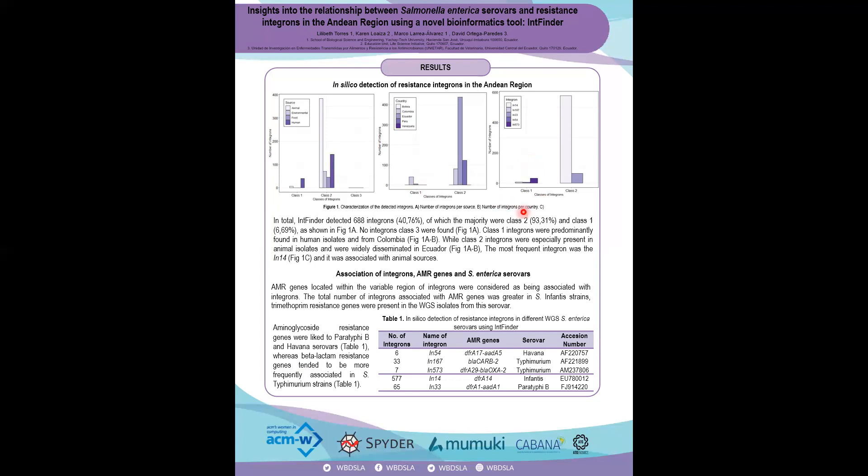All these integrons were related to resistance genes. As you can see in Table 1, the trimethoprim resistance genes were linked to S. Infantis. Aminoglycoside-resistant genes were linked to Havana and Paratyphi. And the beta-lactam resistant genes were linked to Typhimurium.